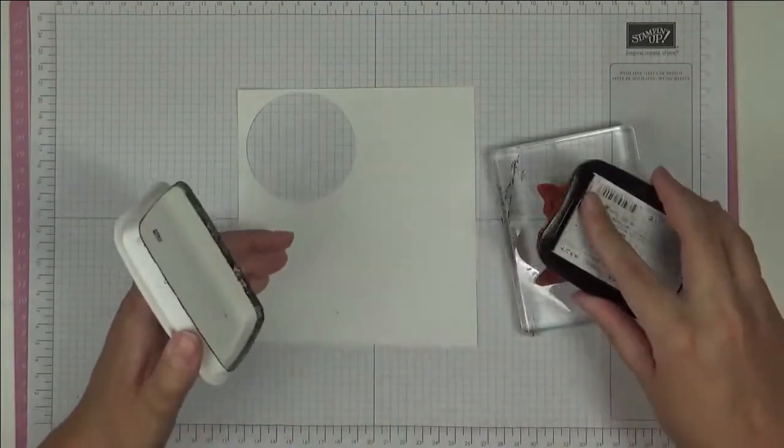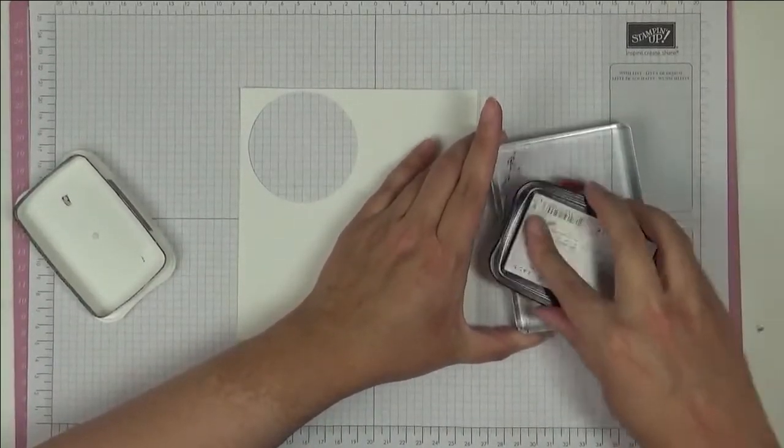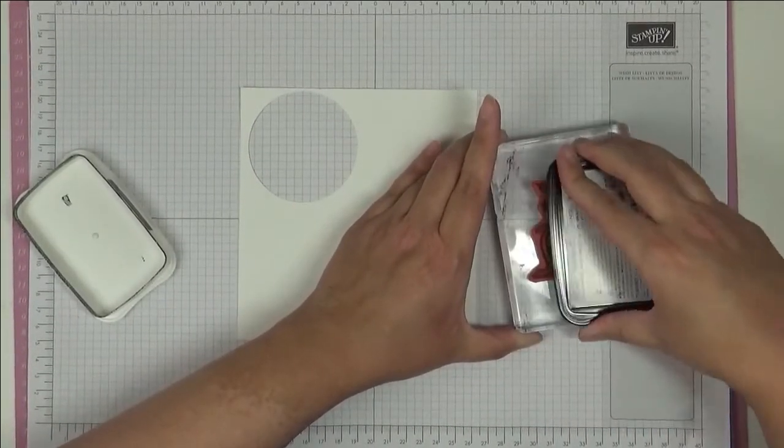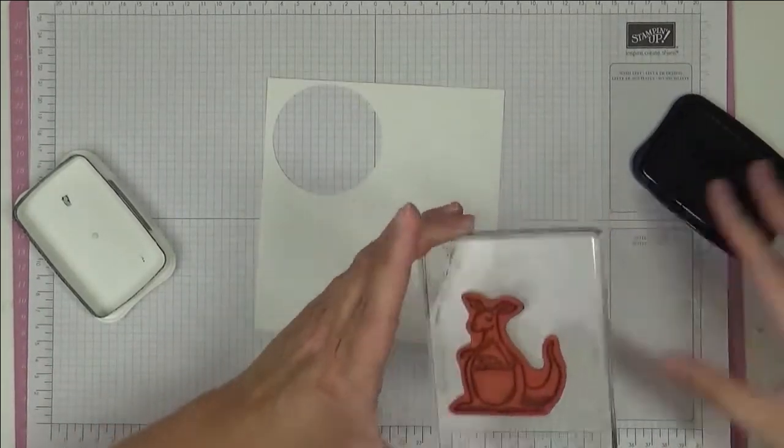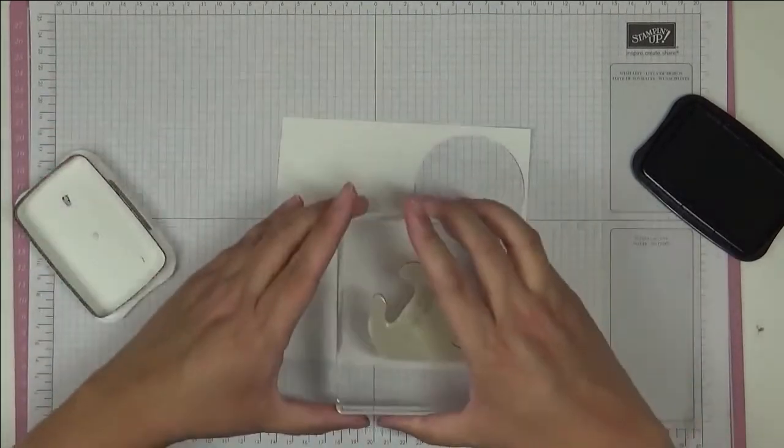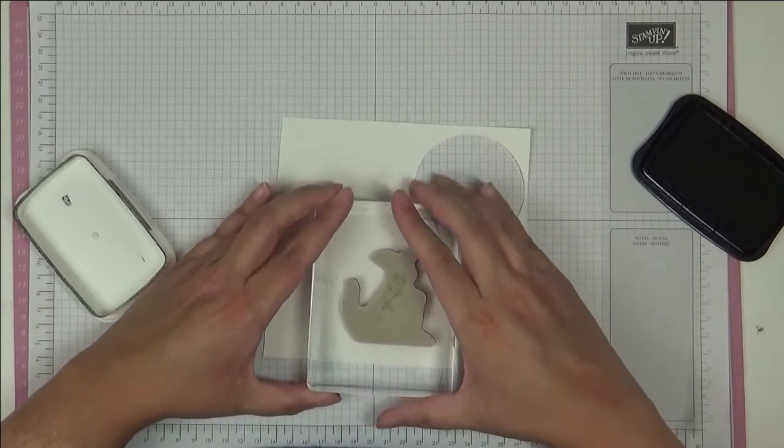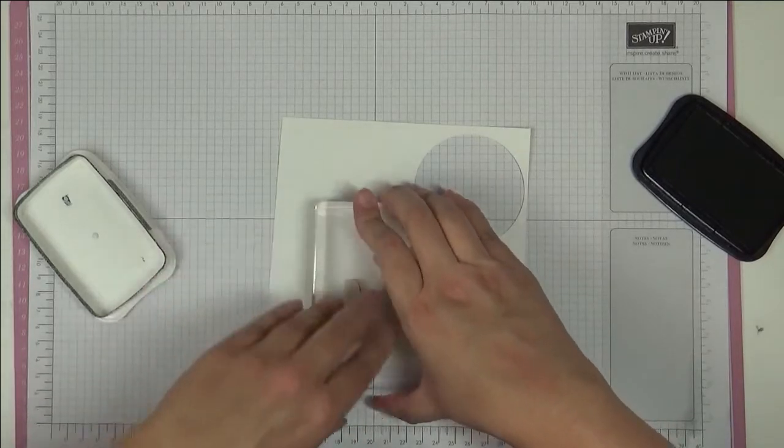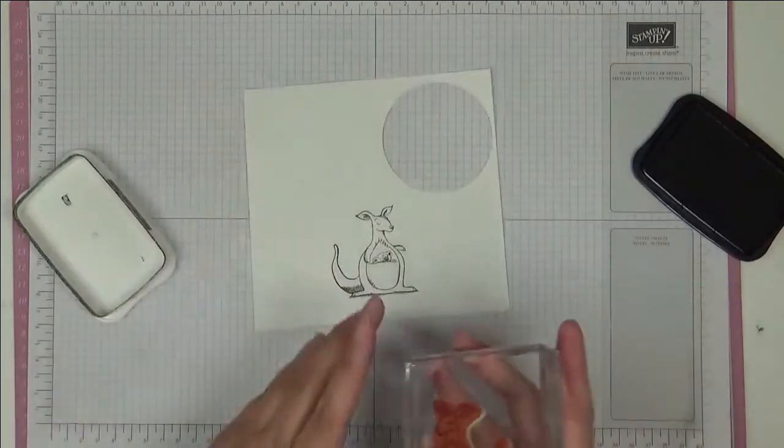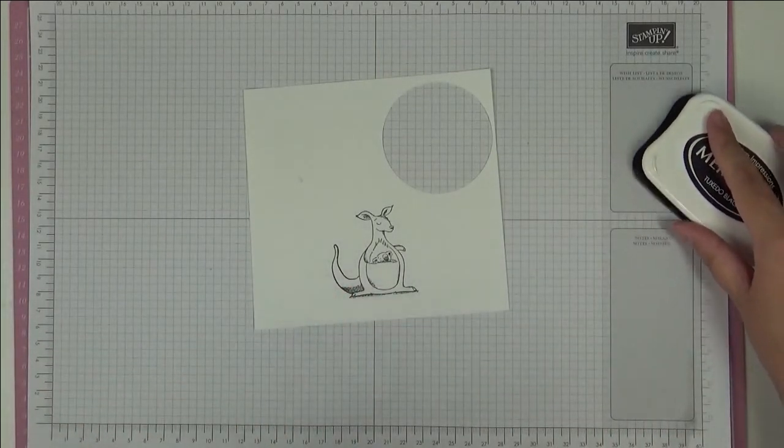We're going to be stamping with Memento because we're going to be coloring using our Stampin' Blends. So let's ink up. My ink pad is not very juicy. I still haven't found my reinker and with the current situation I don't really want to order too much, but I've just got to find it. I do have it somewhere. So let's stamp. Hold it. Yeah, that's fine. So let's close up our ink pad. I've already got ink on my fingers. Can you believe it?